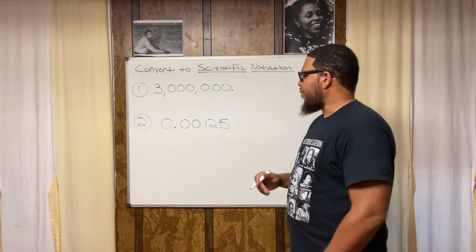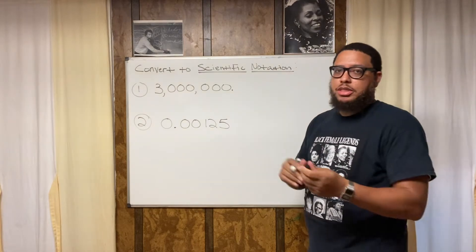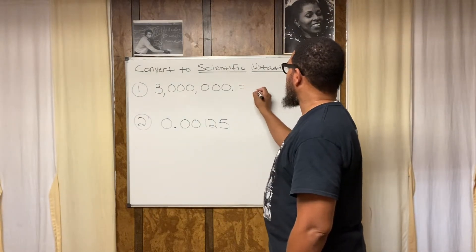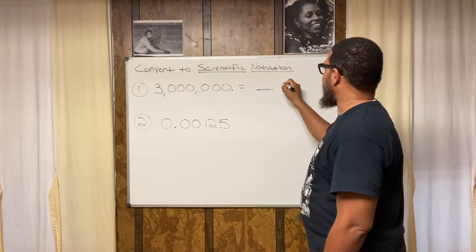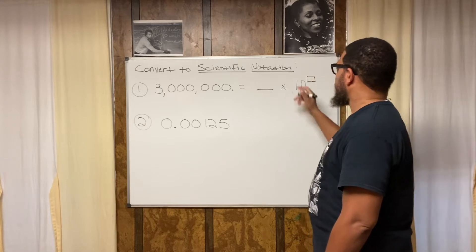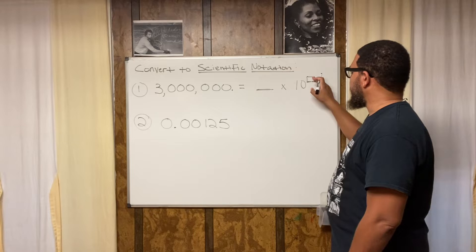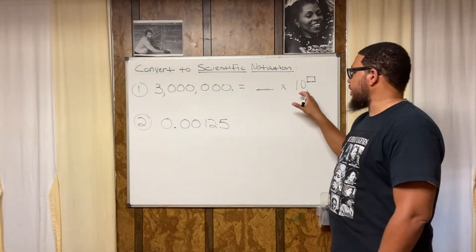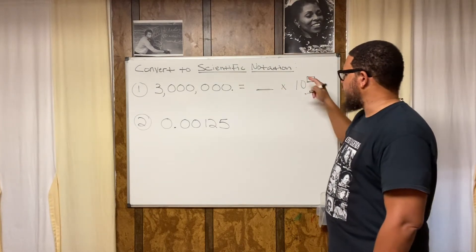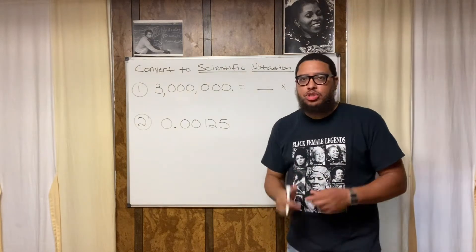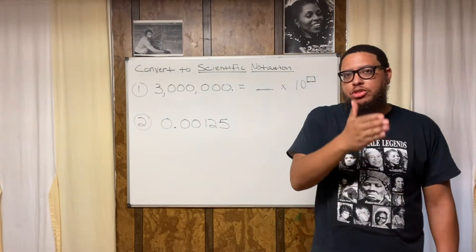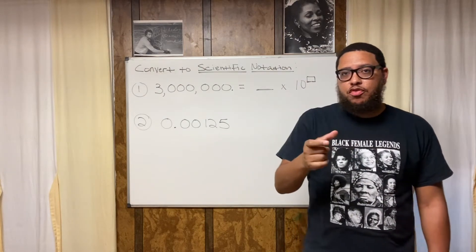So your first step is identify where the decimal point is. Now let me explain scientific notation. Scientific notation is a way to write a number expressed in two parts. The first part is what I like to call the factor, then you got a multiplication sign, then a 10 with an exponent. So we got to figure out what number goes in the factor spot and what number goes in the exponent spot. It's always a multiplication sign, always a 10 as your base.